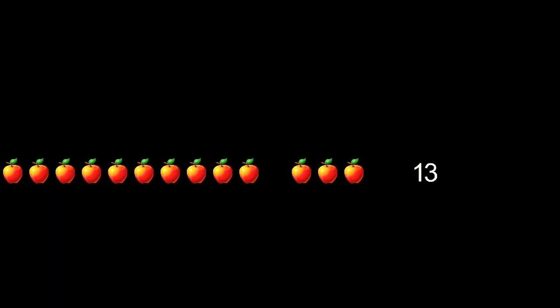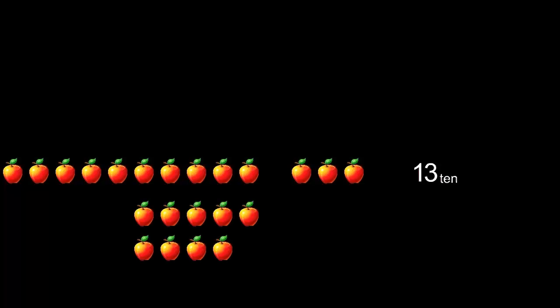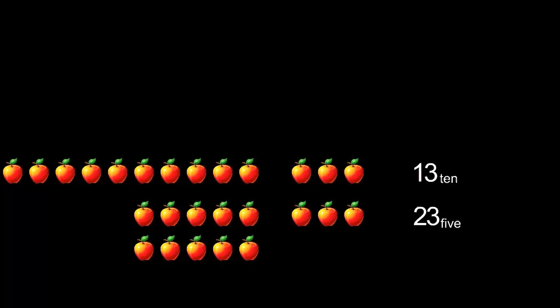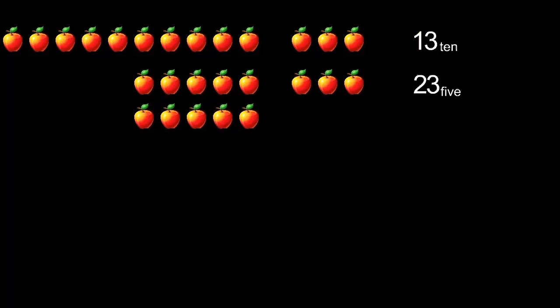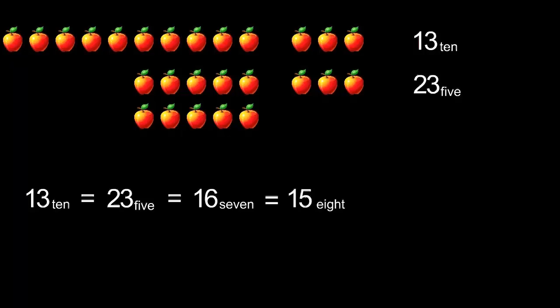So I've got to write that down as one, three, or thirteen. And I've got to write a little ten after that to show that it's in what we call base ten. If I group them in groups of five, I'll finish up with two groups of five and three left over, so I'll write that as twenty-three with a little five afterwards to show that's base five. So we now know that thirteen in base ten is twenty-three base five.